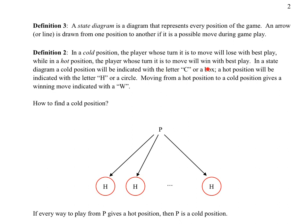Sometimes we use a color code: if you have blue and red, maybe blue is nice for cold and red is nice for hot. Hot positions will be indicated with a letter H or a circle — so boxes or blue for cold, and H, circles, and red for hot.